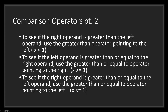To see if the left operand is greater than or equal to the right operand, use the greater than or equal to operator pointing to the right. The greater than or equal to operator will be the right arrow symbol followed by an equal sign, expressing if x is greater than or equal to one. If x is one or any number greater than one, this operator will return true. However, if x is any number less than one, then this operator will return false.